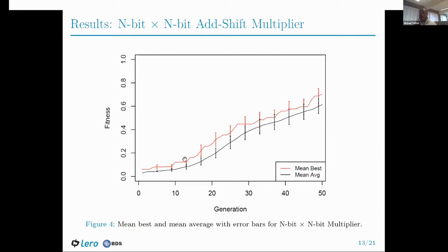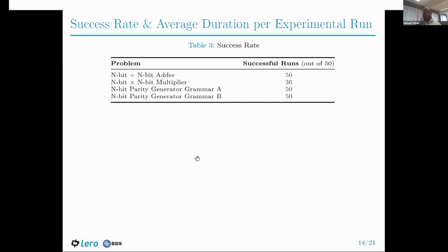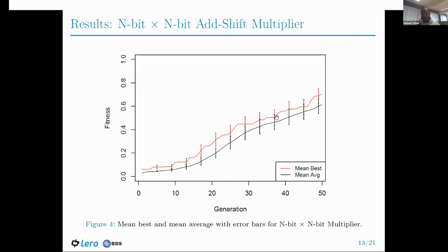For the multiplier, both the mean best and mean average fitnesses across generations increase slowly as the evolution progresses, but we can see that the fitness is increasing. We also observe that the error bars begin to widen as the evolution progresses, indicating high variability between the fitness values of these individuals. We are expecting the multiplier circuit convergence to eventually look more like the adder graph from the previous slide.